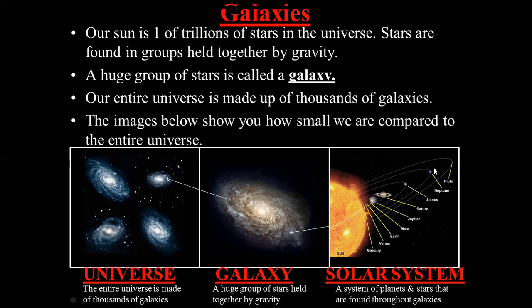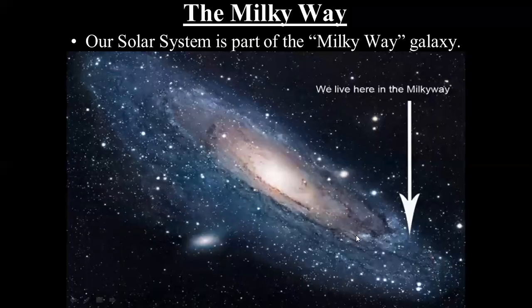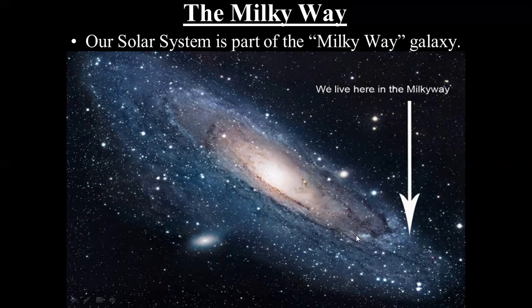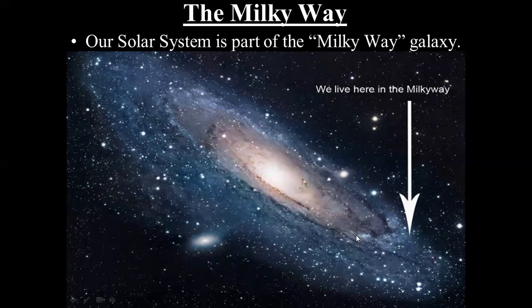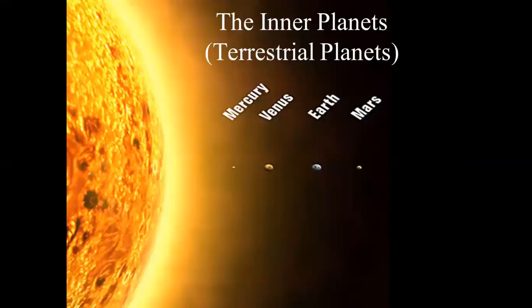A huge group of stars held together by gravity is called a galaxy. Our entire universe is made up of thousands of galaxies. If we talk about our solar system, it means the sun and the eight planets which we have learned. This solar system lies in the Milky Way galaxy. Its complete name is Milky Way's Orion Star Cluster, in which our Earth is living. There are some planets which are inner and outer, as we have seen.